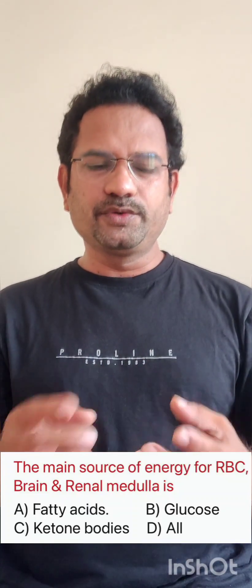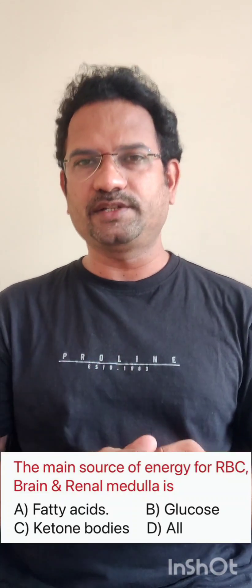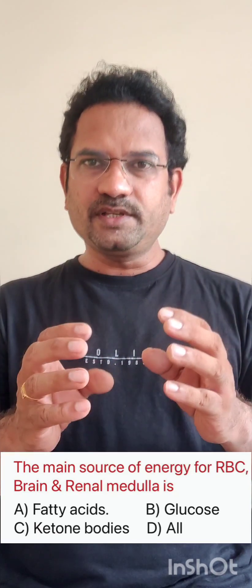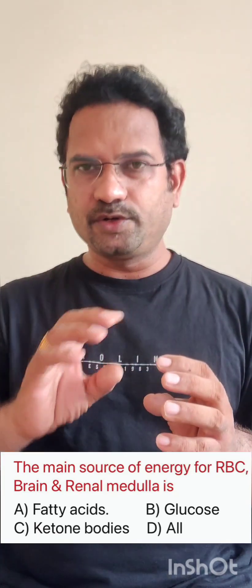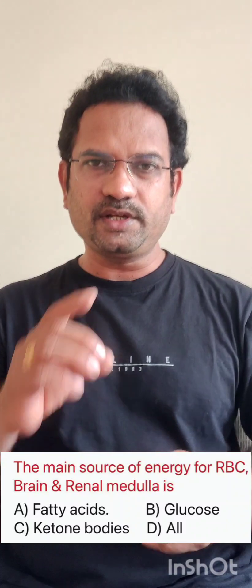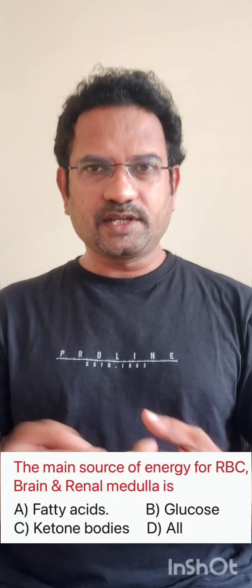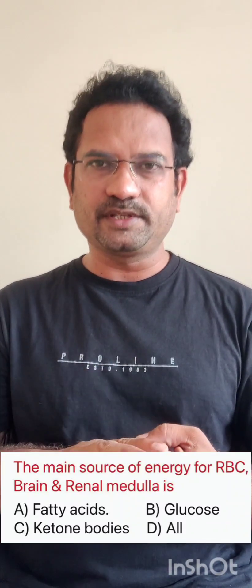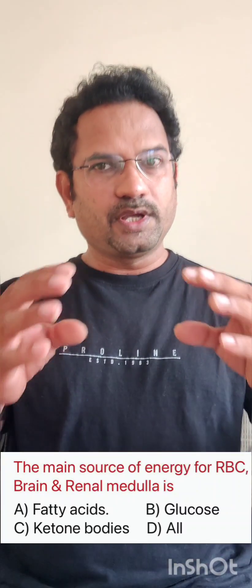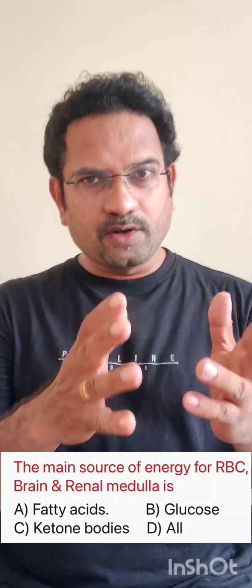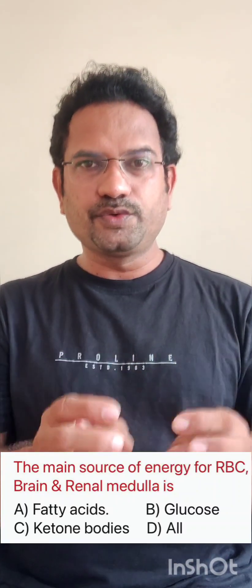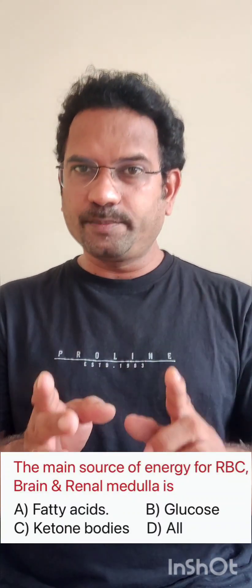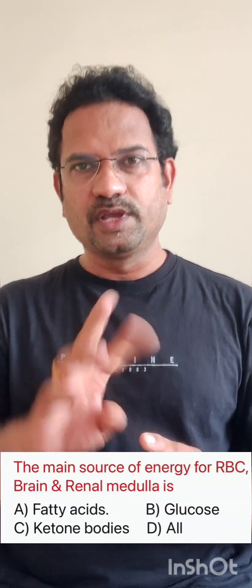Usually the body uses glucose and fatty acids to get energy. But in the case of RBC, RBC has got no nucleus and no mitochondria. If mitochondria is not there, the citric acid cycle and electron transport chain won't happen in RBC. So in the cytoplasm, only glycolysis occurs, and glycolysis uses glucose to generate ATP. So for RBC, the sole source is glucose.